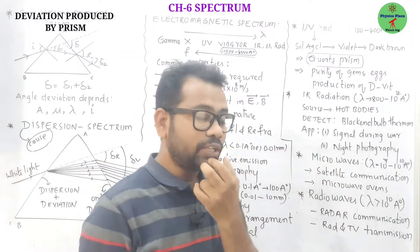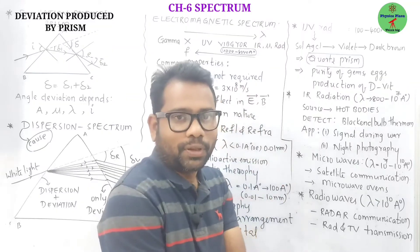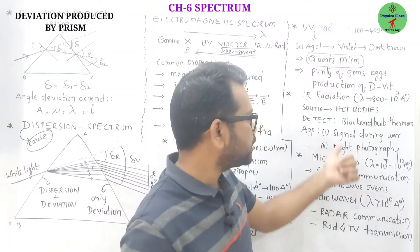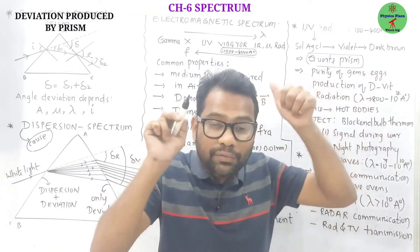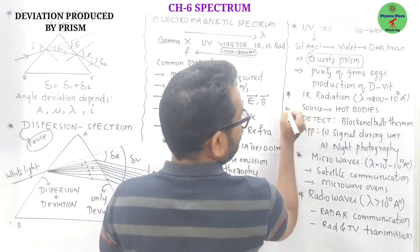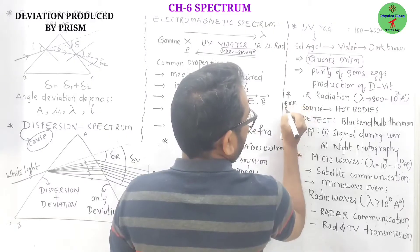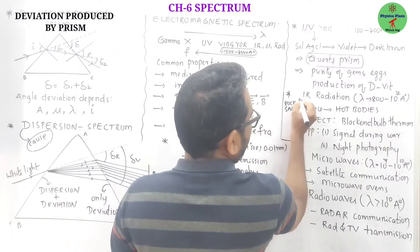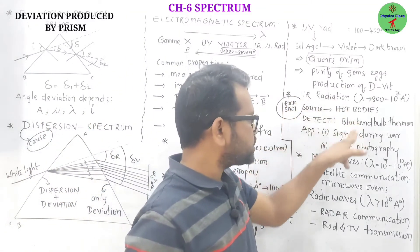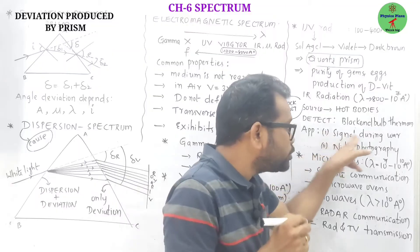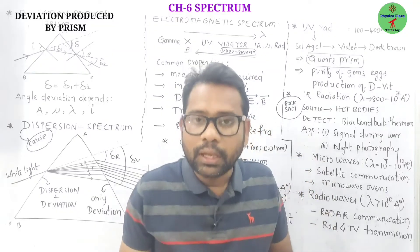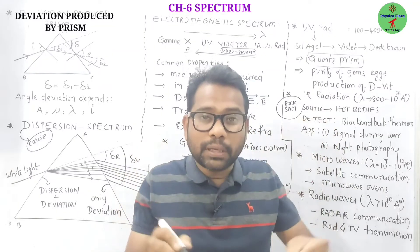Now, infrared radiations — these are also called heat radiations. The sources are hot bodies. How can we detect infrared radiation? By using a blackened bulb thermometer. How can we get the infrared spectrum? A rock salt prism is used to obtain the infrared spectrum. Applications: these infrared radiations are used as signals during war because they are invisible and are not much absorbed by the medium.